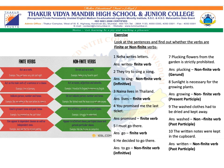Ninth sentence: 'The washed clothes had to be dried and kept away.' The clothes are described here, so 'washed' is the non-finite verb, and it is the past participle. And the last sentence: 'The written notes were kept in the cupboard.' Again, you're describing the notes, and it is 'written'. So 'written' is the past participle, and therefore it is a non-finite verb. Similarly, you can find sentences and pick out the verbs, and say whether they are finite verbs, and if they are non-finite verbs, whether it is an infinitive, whether it is a participle, or a gerund.